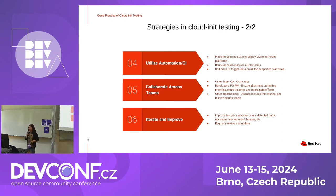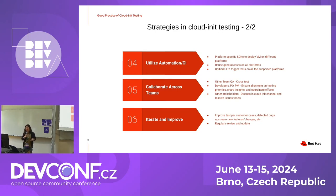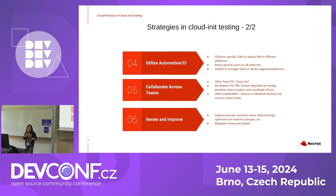The fifth strategy is to collaborate across teams. We have good collaboration with other team QA, developers, PM, PO, and other stakeholders. This helps cover cross-team testing easily and ensures alignment on testing priorities, shared insights, and coordinated efforts. The last strategy is to iterate and improve through regular review and update of our tests. By implementing these strategies, cloud-init delivers higher quality software, customer bugs were reduced year by year, and we gained more time to set up automation and CI — forming a good positive cycle.